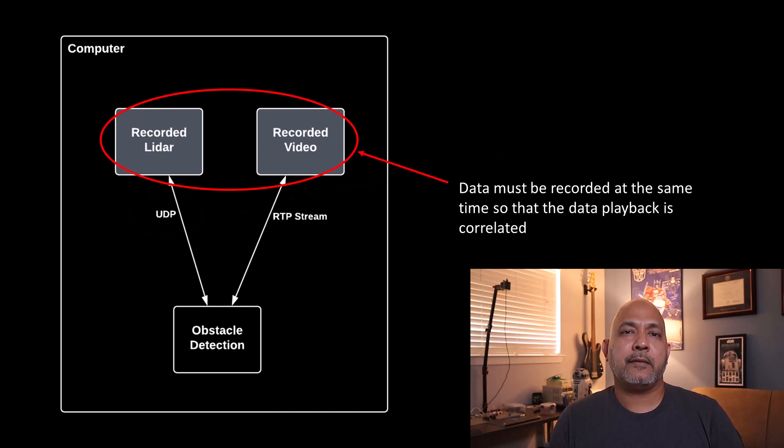And because of the way our obstacle detection algorithm is structured, we need to synchronize the LiDAR and the camera data somehow. The fourth approach is testing with fake data — similar to simulation and recorded data, but we're going to manually generate some data to feed into our system.